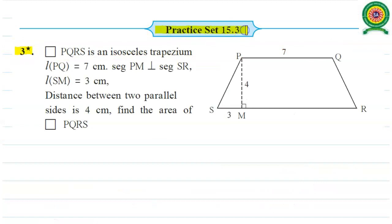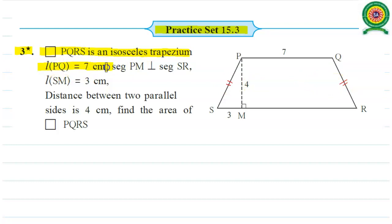Now look at the third question from Practice Set 15.3. Quadrilateral PQRS is an isosceles trapezium. What is meant by an isosceles trapezium? Here we have given PS is congruent to QR, that means pairs of non-parallel sides of the trapezium are congruent. We have given: length of PQ is 7 cm, segment PM is perpendicular on SR, length of SM equals 3 cm, and distance between two parallel sides is 4 cm. Find the area of quadrilateral PQRS.